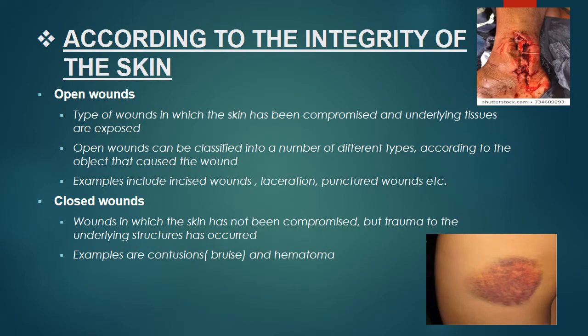According to the integrity of the skin: open wounds are wounds in which the skin has been compromised and underlying tissues are exposed. Open wounds can be classified into different types according to the object that caused the wound — examples include incised wound, laceration, puncture wounds, etc. Closed wounds are wounds in which the skin has not been compromised but trauma to the underlying structure has occurred — in layman's terms, internal bleeding. Examples are contusions or bruises and hematoma.